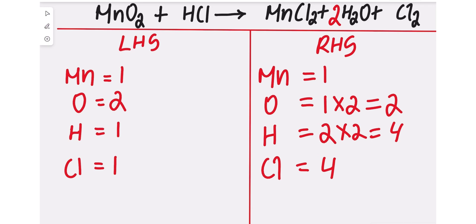We now have 4 hydrogen atoms on the right-hand side, so we need to balance it on the left-hand side. We're going to add a coefficient of 4 in front of HCl, which makes the hydrogen 4. This will also change the number of chlorine atoms on the left-hand side, making it 4 as well.